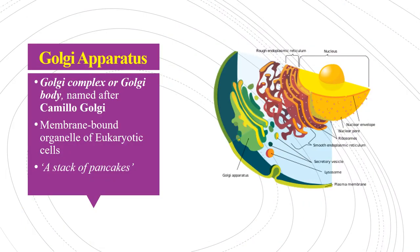Now let's learn about the Golgi apparatus. The Golgi apparatus is also known as the Golgi complex or the Golgi body, named after the Italian pathologist Camillo Golgi. It is the membrane-bound organelle of the eukaryotic cell. It looks like a stack of pancakes because it is made up of a stack of flattened membrane sacs which are known as cisternae.